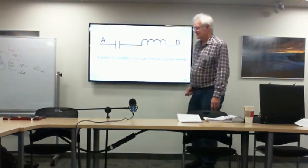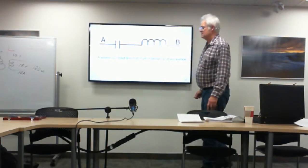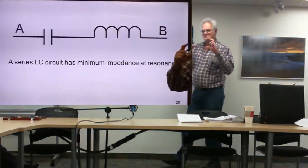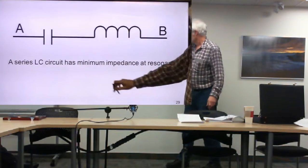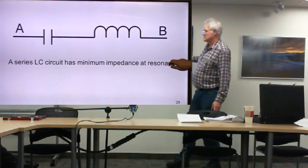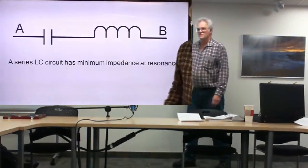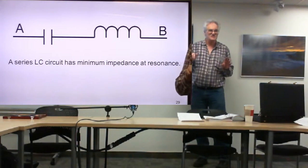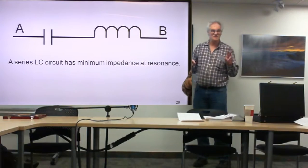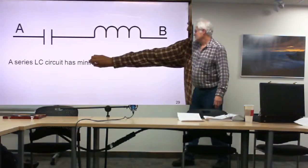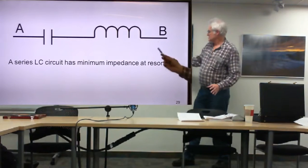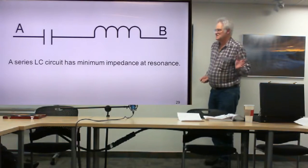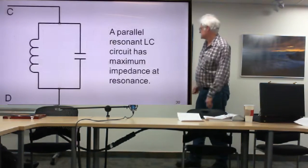We use this for filters in a radio. At the resonant frequency, the minimum impedance allows that particular frequency through. You can design the circuit with a variable capacitor or variable inductor — by adjusting them, you set the resonant frequency of the circuit to the frequency you want to pass. This is commonly used in radio theory.